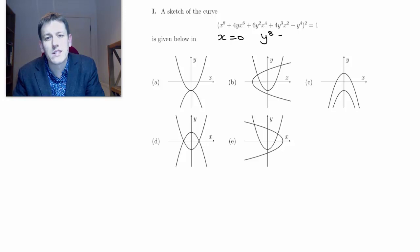Okay and that can only be the case when Y is equal to plus or minus one. And similarly if I put Y equals zero, then all of these terms apart from the X^8 are going to be zero so I just get X^16 equals one because I'm squaring it of course. So again I get X equals plus or minus one.